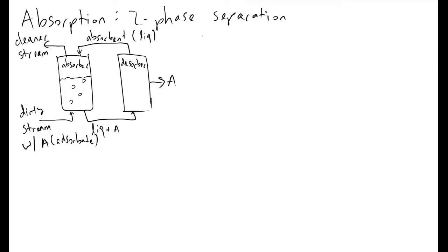Absorption is a major topic in chemical engineering and the use of separations in mass transfer. Absorption relies on the difference in concentration as a driving force to move a species A, the absorbate, from one phase into another. In this example, I will discuss how we can take a stream that contains some kind of pollutant or toxin like A and use an absorber to extract A from it to get a cleaner stream.